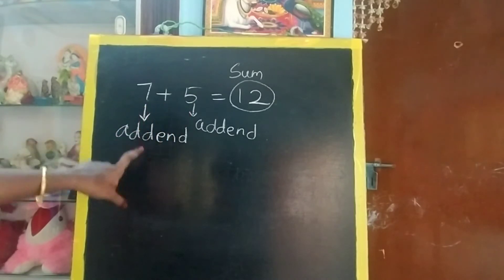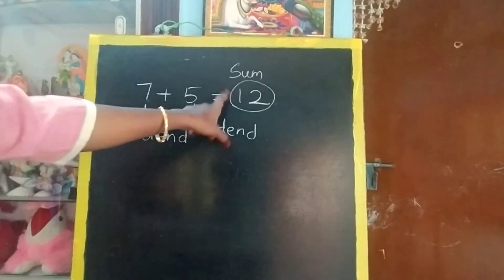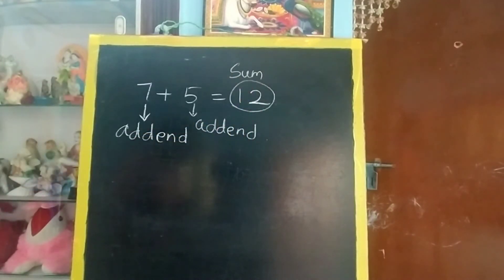So whatever number we are adding, this is called as addend. The answer we are getting is sum. When we add, we are getting the answer. This is called as sum.